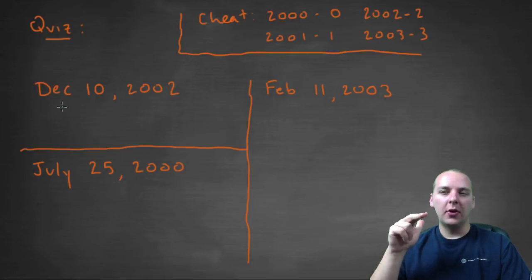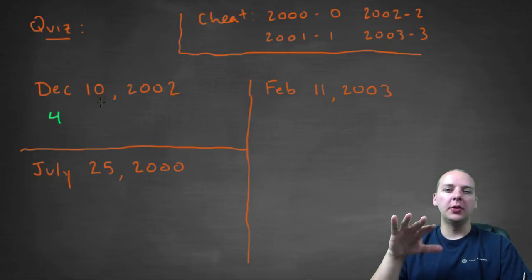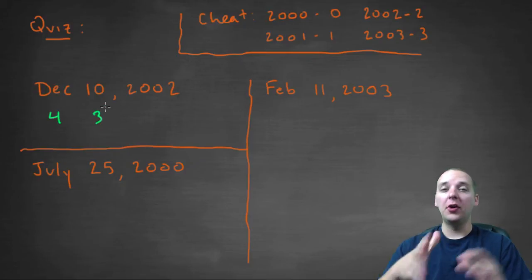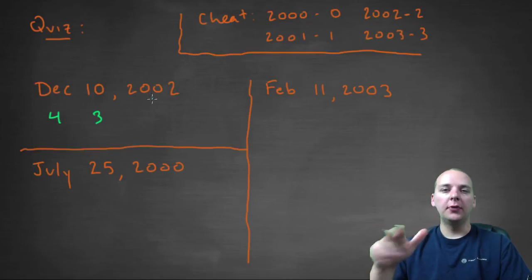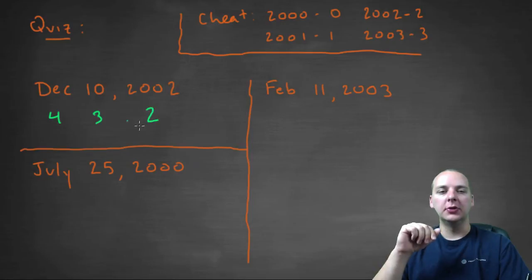So December's month code, when I think December, I think Xmas, that was 4. Okay, what about day code? Day code, you remember you can take that modulo 7. 10 modulo 7 would be 3, because whatever day of the week the 10th would fall on, the 3rd would fall on the same day. The year code for 2002, we have to cheat because we haven't really talked about year codes, is a 2.